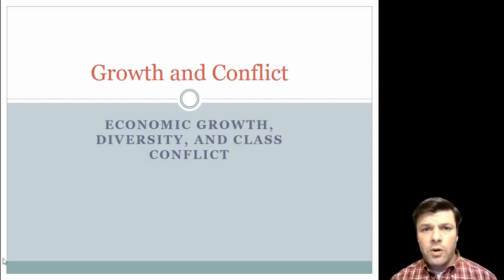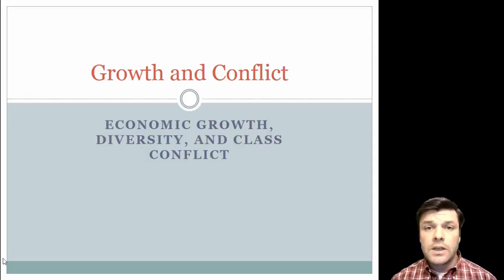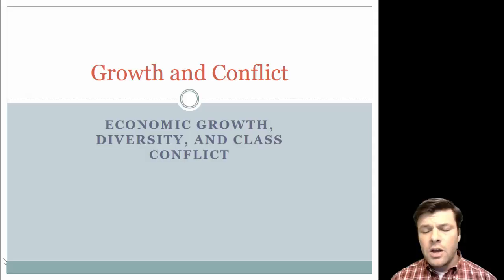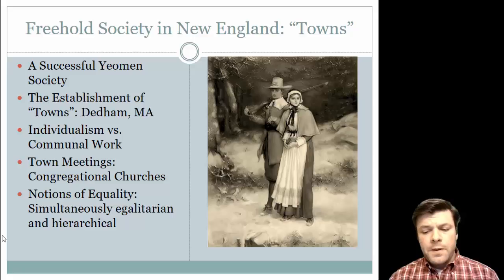If you've been following along, you'll know that there are two primary sets of English North American colonies by 1630. You have Virginia and Maryland — collectively known as the tobacco colonies — and approximately 500 miles to the north, what we refer to as the New England colonies. Today we're going to talk about the further diversification of the New England colonies and the broadening of the English North American Empire as the period unfolds.